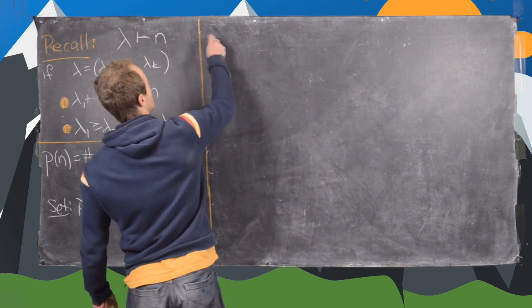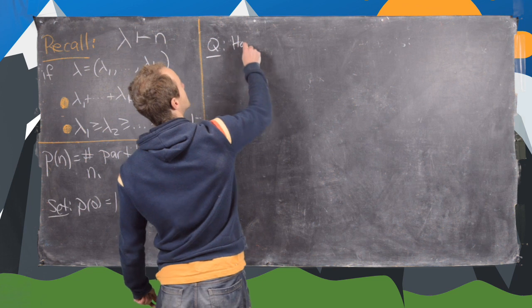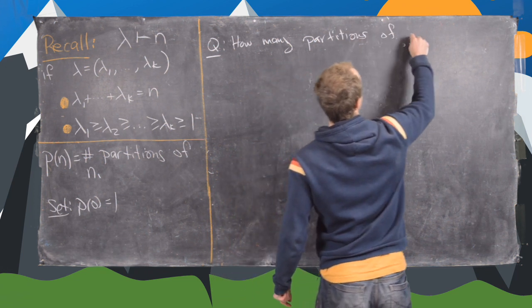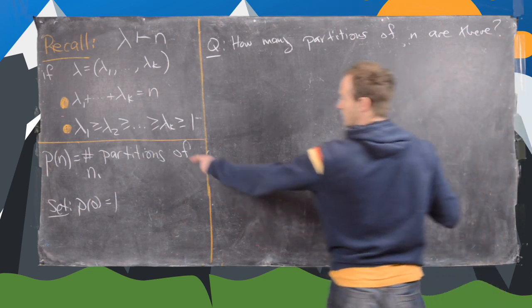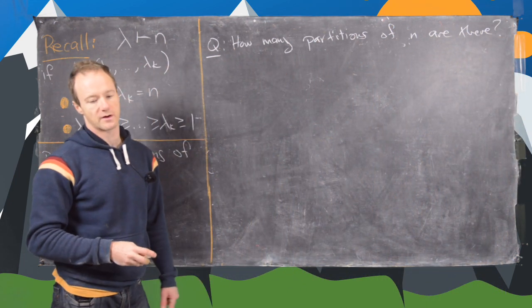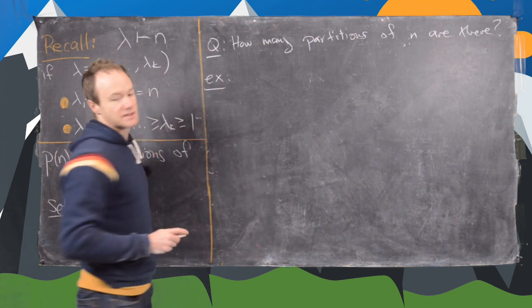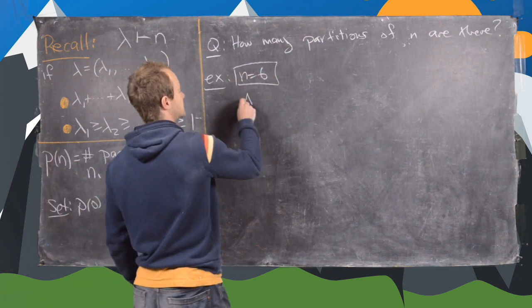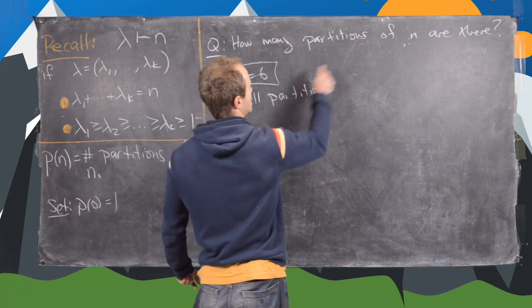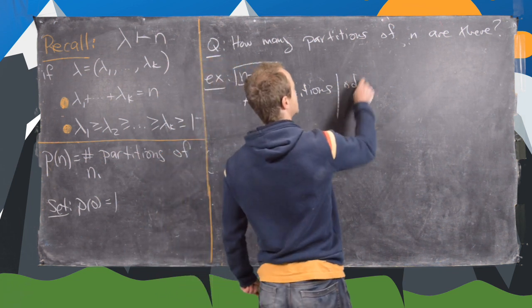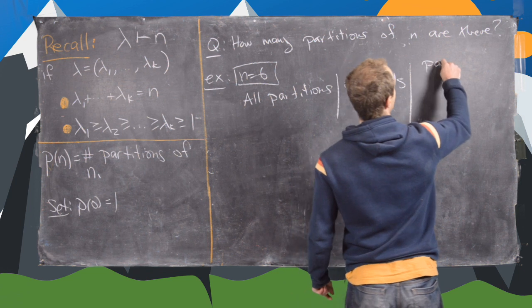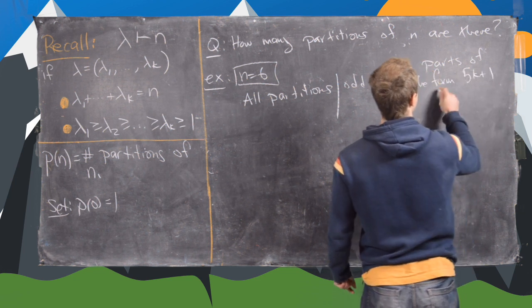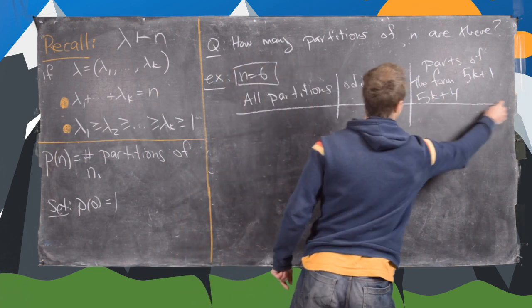An obvious question to ask is how many partitions of n are there — is there some sort of formula? Let's look at n = 6. We'll look at all partitions, then at ones with odd parts, and then at parts of the form 5k+1 or 5k+4, motivated by something we did last time.